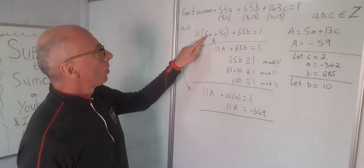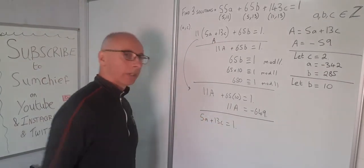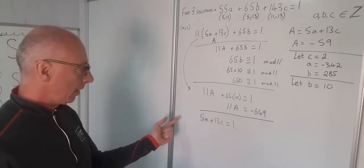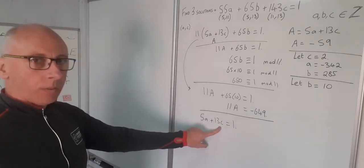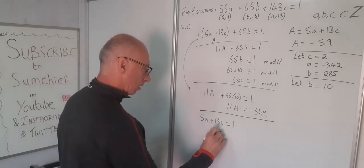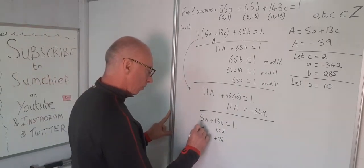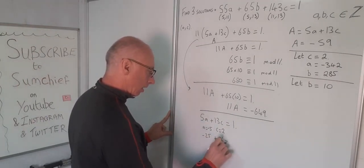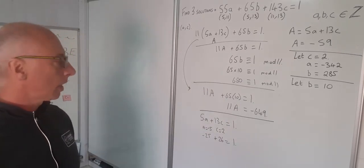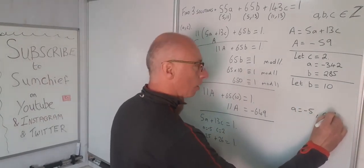Now I need solutions for 5A plus 13C equals 1. There'll be two solutions — one with positive A and negative C, and the other the reverse. Going for a positive C value: if C equals 2, that gives 5A plus 26 equals 1. So A will be minus 25, meaning 5 times minus 5 equals minus 25, so A equals minus 5. That gives minus 25 plus 26 equals 1. So A equals minus 5 and C equals positive 2.